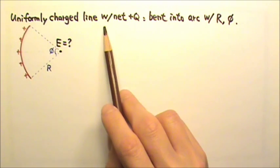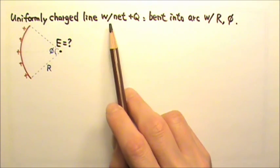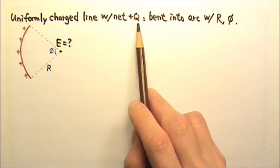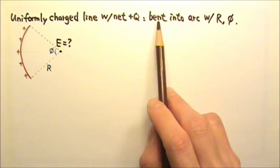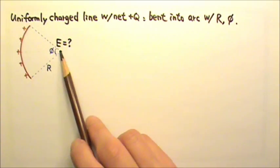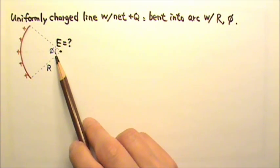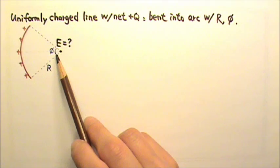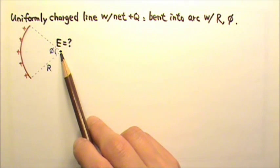A uniformly charged line with net charge positive q is bent into an arc with radius R and angle phi. What is the electric field at the center of this arc?